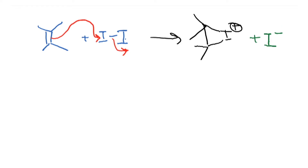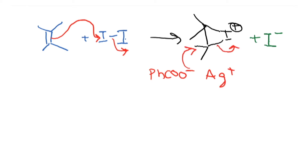There are several possibilities for this iodonium ion. If iodide (I⁻) were the only nucleophile present, it could attack and give the diiodide. But benzoate is present, so the benzoate COO⁻ actually attacks and opens up the cyclic iodonium ion.